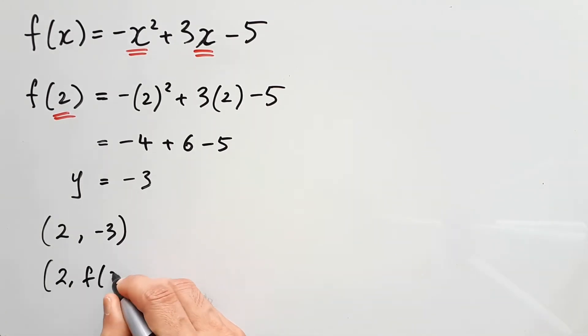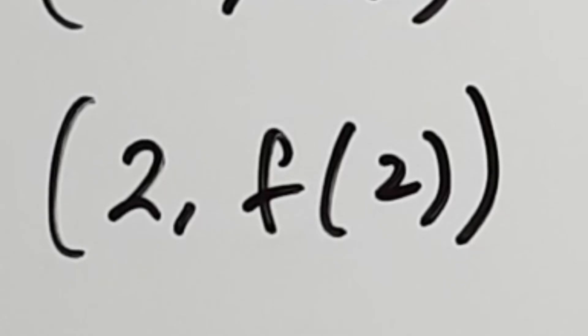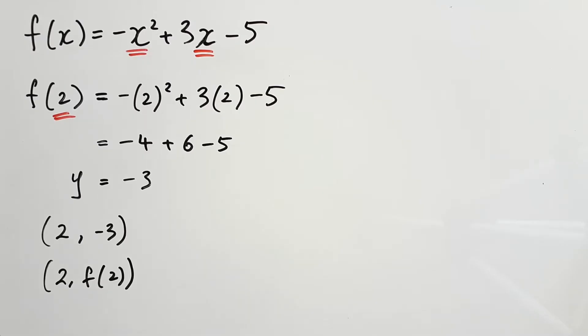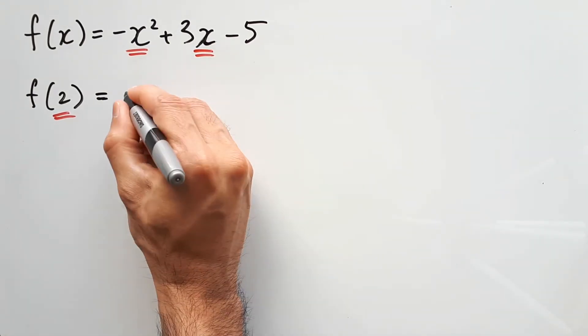You could write the coordinate as 2 comma f of 2, but nobody really writes it that way. It's not really going to give you enough information. Although you can expect stuff like that in a question, and so you would have to work that out to get 2 comma negative 3. So we can conclude and say f of 2 is negative 3.